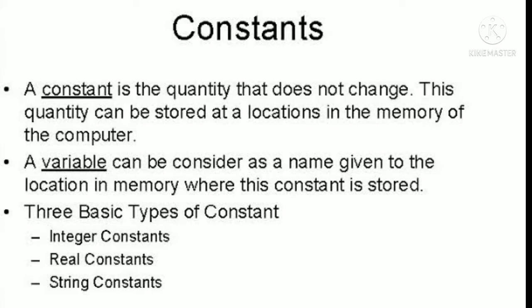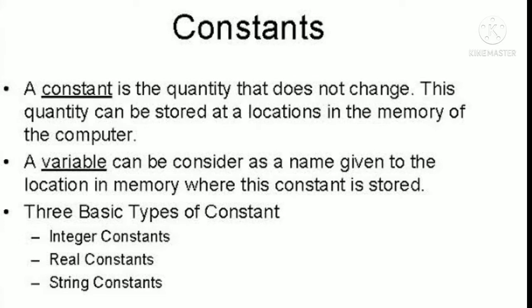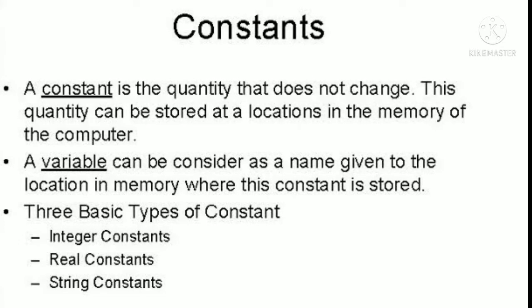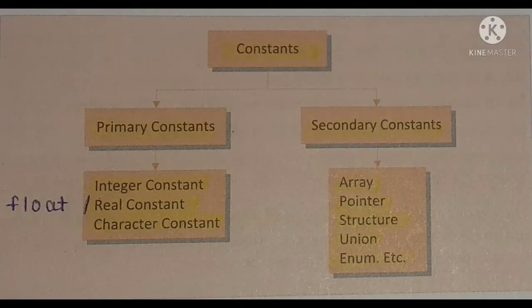A variable can be considered as a name given to a location in memory where the constant is stored. Basically, a variable is a quantity that may be changed. First we see types of constants in C.